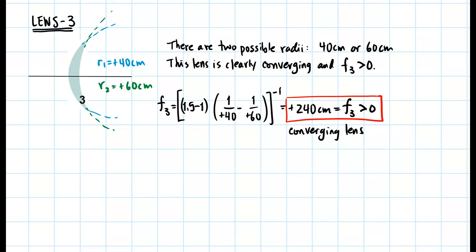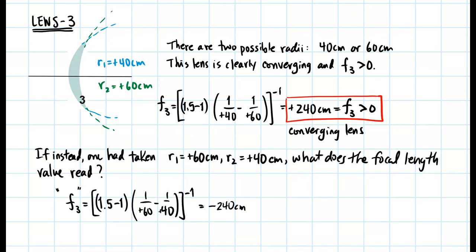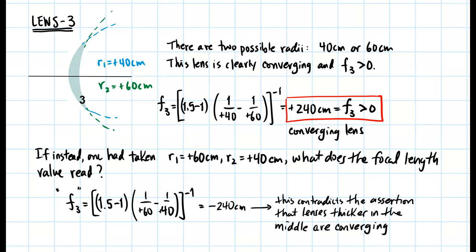But what if we had chosen the wrong values? If instead we take r1 to be 60 and r2 to be 40 centimeters, the focal length comes out to negative 240 centimeters. This contradicts the assertion that lenses thicker in the middle are converging, so we know this assignment is incorrect. Also, if we reverse lens 3, both radii of curvature become negative, but we still get a positive 240 centimeter focal length.